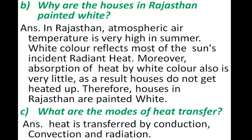Question: why are the houses in Rajasthan painted white? Answer: in Rajasthan the atmospheric temperature is very high in summer. White color reflects most of the sun's incident radiant heat. Moreover, absorption of heat by white color is also very little. As a result, houses do not get heated up, therefore houses in Rajasthan are painted white.